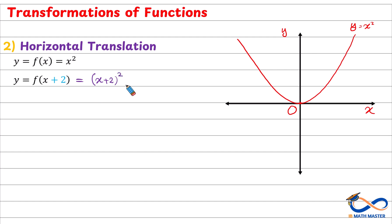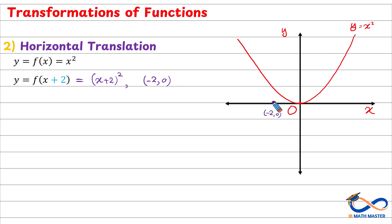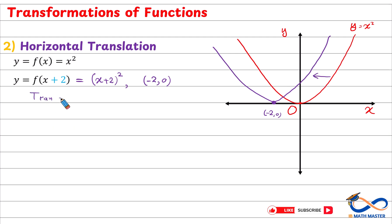Try replacing x by negative 2: y will be (−2 + 2) squared = 0 squared = 0. So the point (−2, 0) is here on the x-axis. If we graph the parabola, it has moved 2 units to the left. So we have a translation of 2 units left.